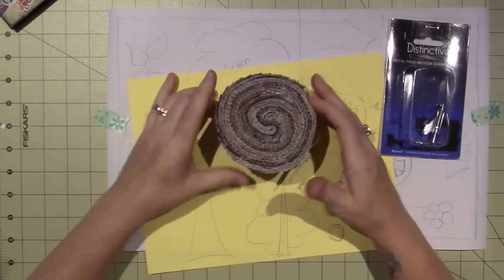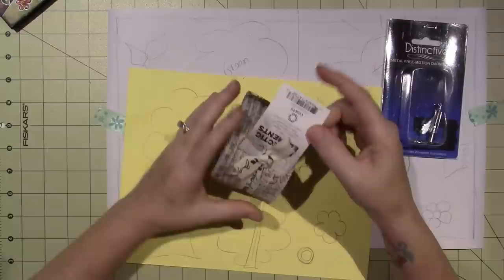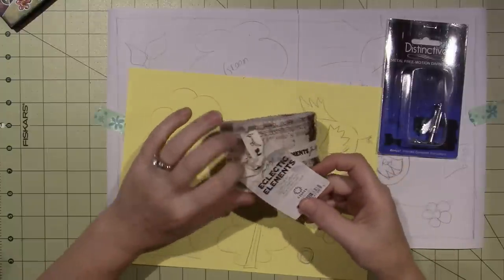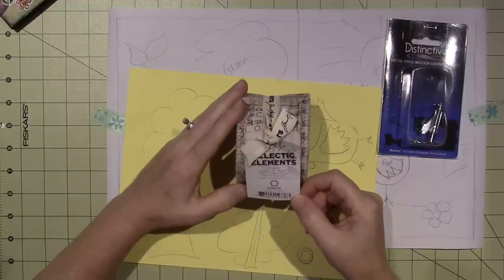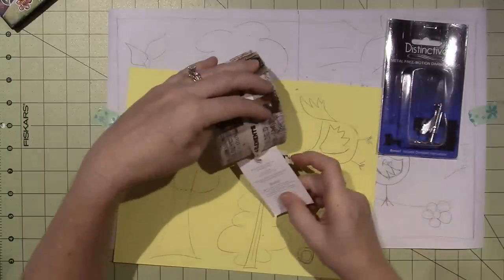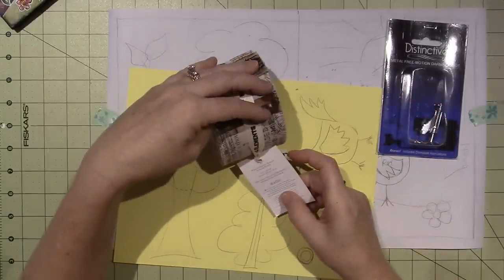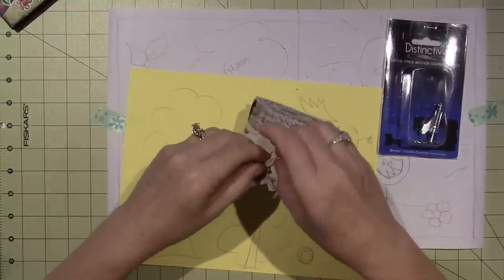Look at this, do you know what this is? This is Tim Holtz fabric, eclectic elements design roll, it's a jelly roll. Let's see if it says how many. They're two and a half inch by 43 or 44, 24 pieces. So let's open it up and see what we have.